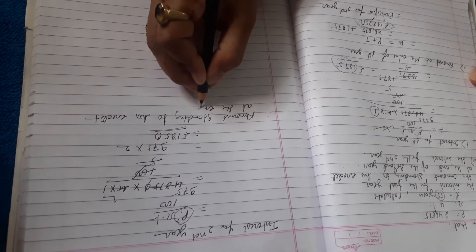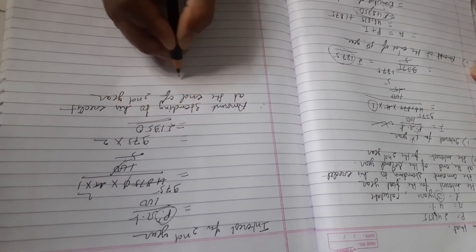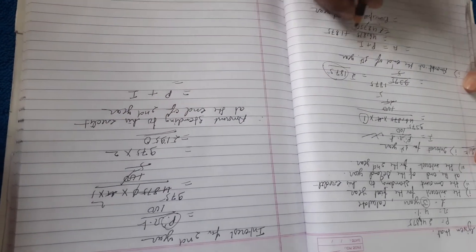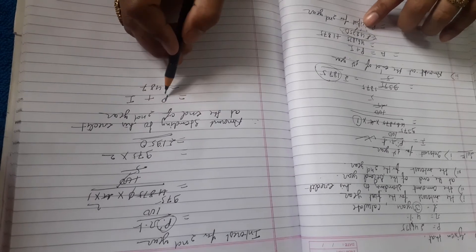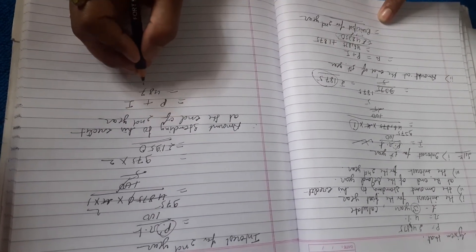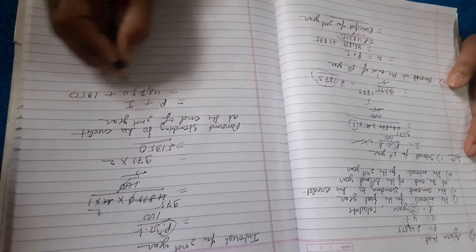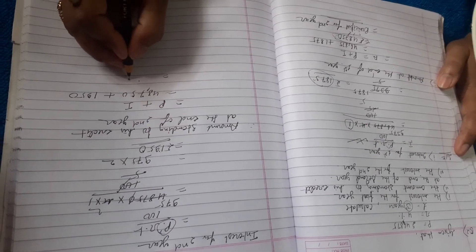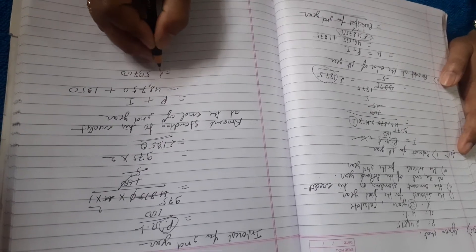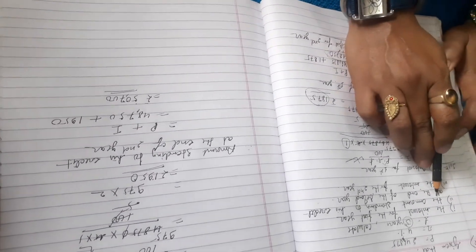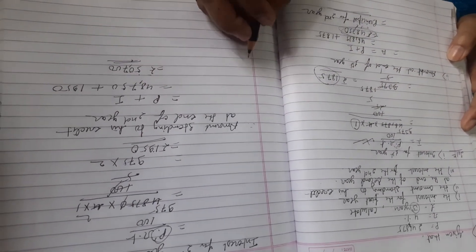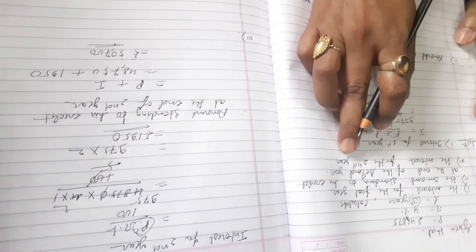The amount standing to his credit at the end of the second year equals the previous year's principal plus this year's interest. The previous year's principal was 48,750 and the interest was 1,950. Adding these gives rupees 50,700. This is the answer to the second question — the amount standing to his credit at the end of the second year is rupees 50,700.